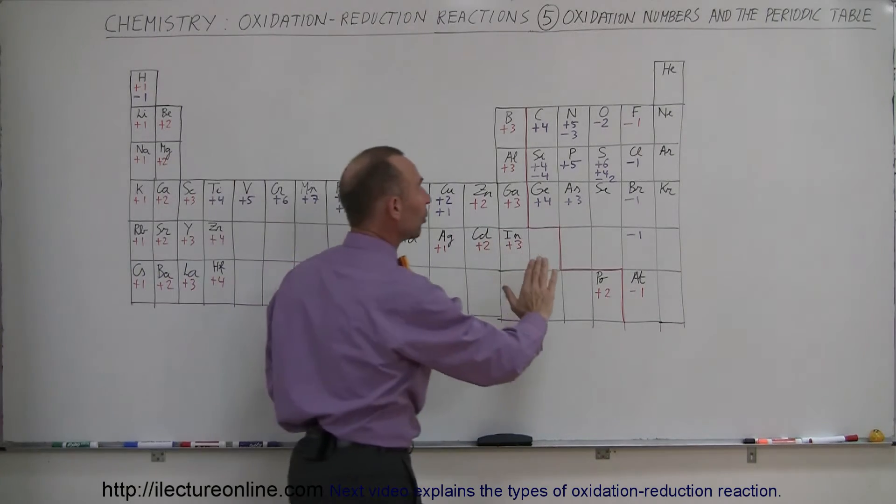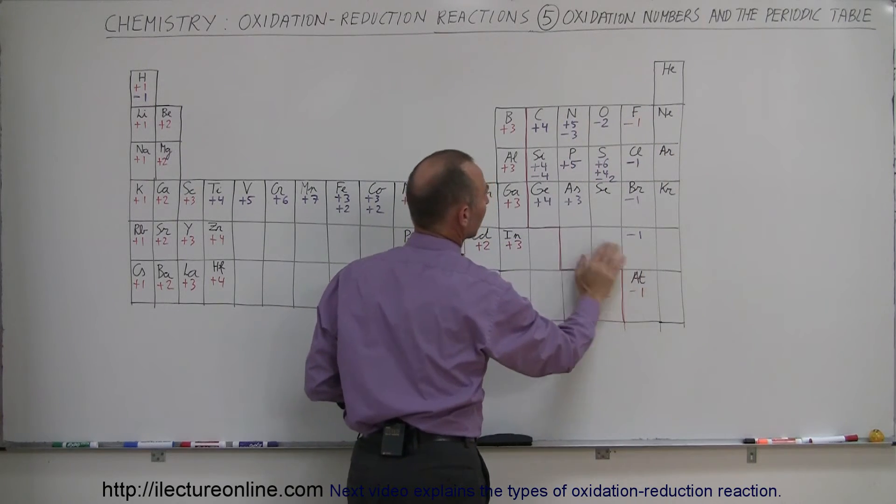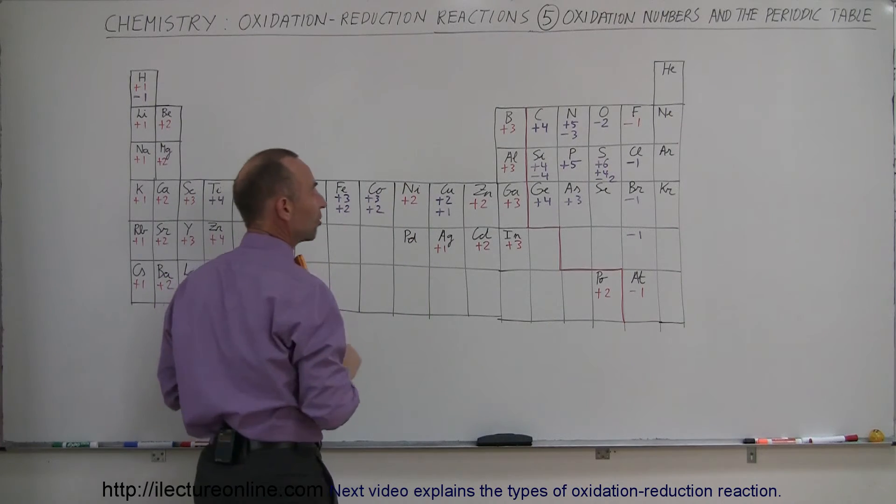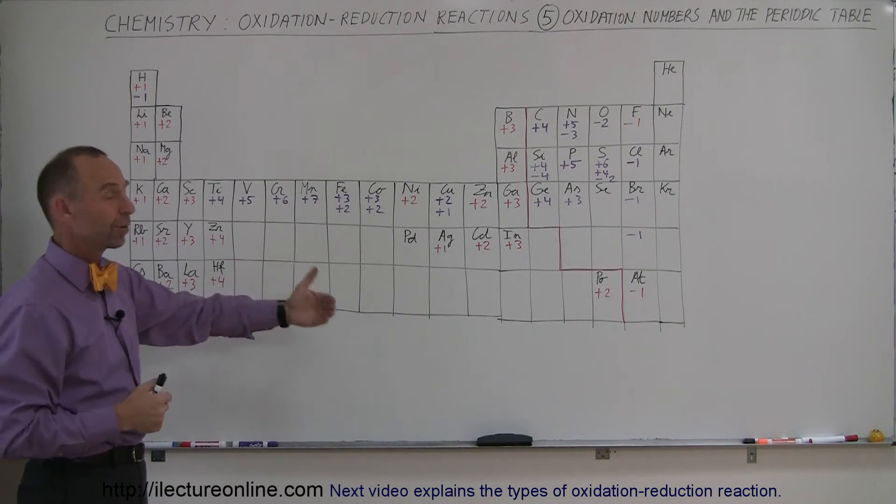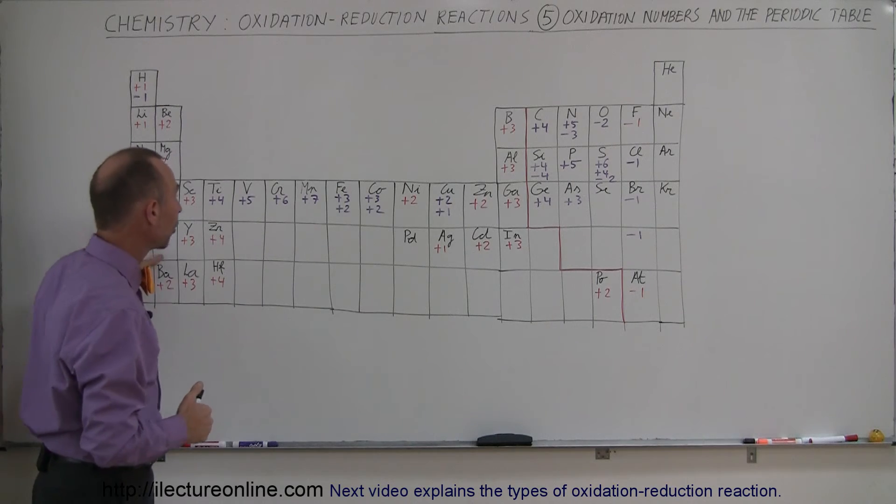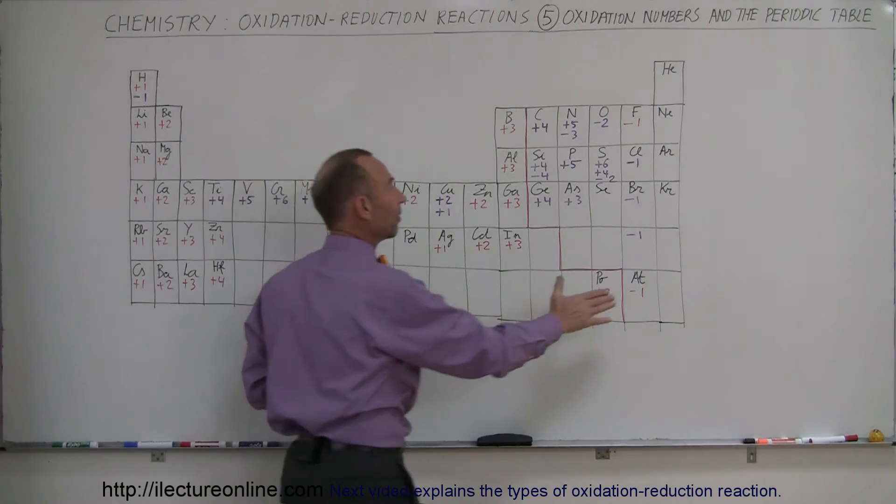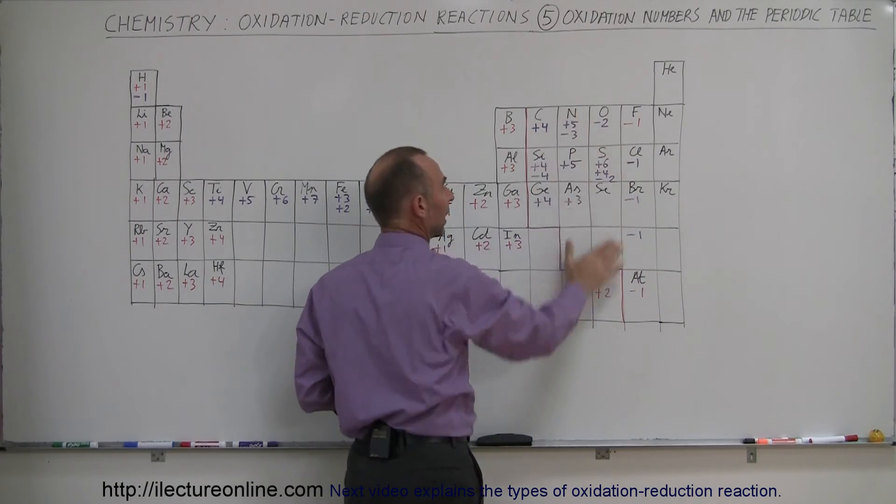Now when we look to the right here, the only elements that can have a negative oxidation number are the elements over here. So the metals here can only have positive oxidation numbers, so they're only willing to donate electrons. They're not willing to accept additional electrons. So these are all what we would call reducing agents, if you want to think about it that way.